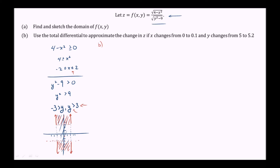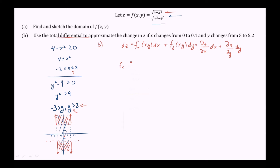For part b, we use the total differential to approximate the change in z if x changes from 0 to 0.1 and y changes from 5 to 5.2. The total differential is dz, which equals the partial derivative of f with respect to x times dx, plus the partial derivative of f with respect to y times dy. We can also write this as the partial derivative of z with respect to x times dx, plus the partial derivative of z with respect to y times dy.